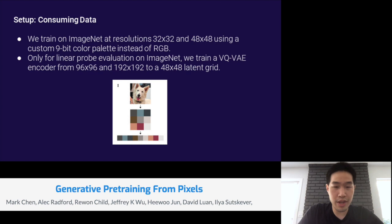Next, I'm going to talk about how we consume data. All of our models are pre-trained on ImageNet. Because of the high computational cost of modeling long sequences with dense attention, we train at resolutions 32 by 32 and 48 by 48. Also computationally motivated, we use a custom 9-bit color palette instead of RGB. To create this palette, we simply cluster RGB values that we see into 512 clusters. Using this palette yields an input sequence that's almost three times shorter than the standard RGB representation, while still encoding color relatively faithfully.